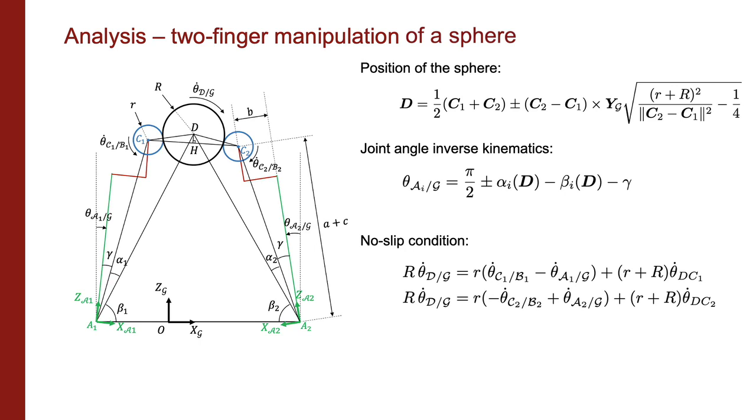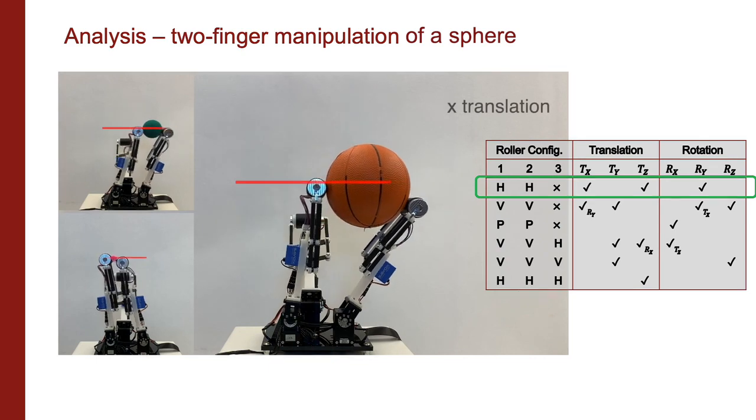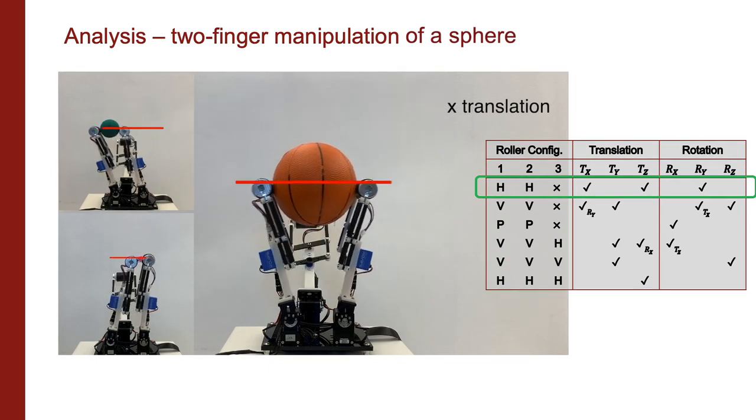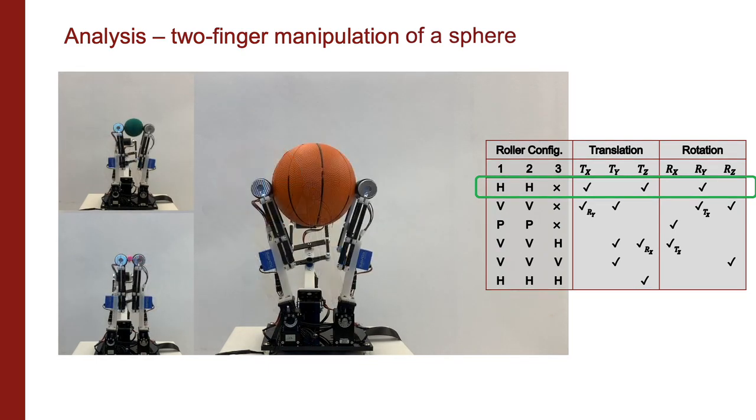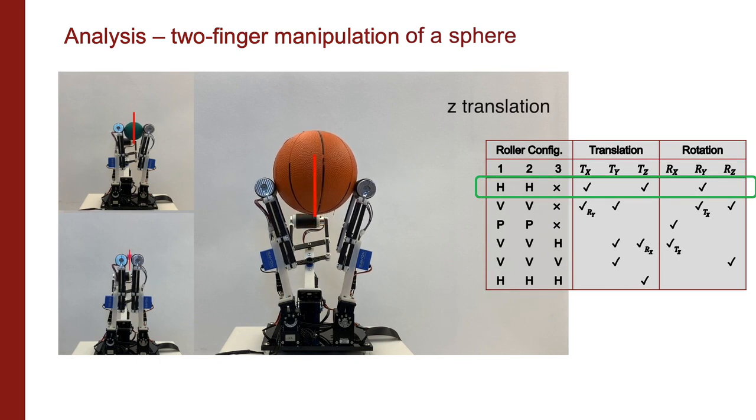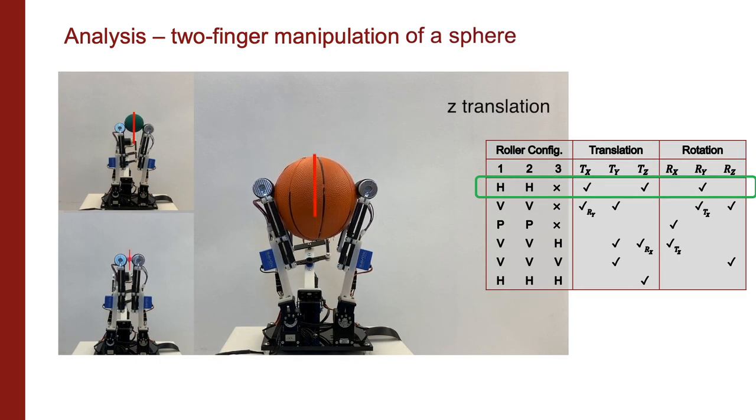The two-finger manipulation can be regarded as a simplified planar problem. The forward and inverse kinematics of the planar problem can be formulated with the position of the sphere, joint angle inverse kinematics carried out using the law of cosines, as well as adding the no slip condition. By solving these equations, we managed to independently control the 3-degree freedom planar motion of a ball, namely the translation in X, the translation in Z, and the rotation in Y.